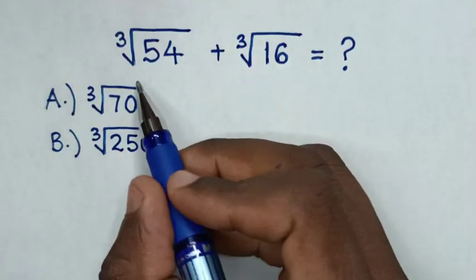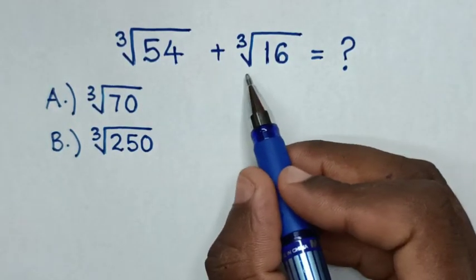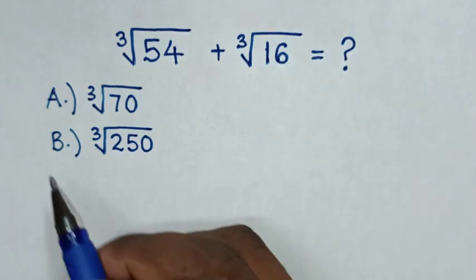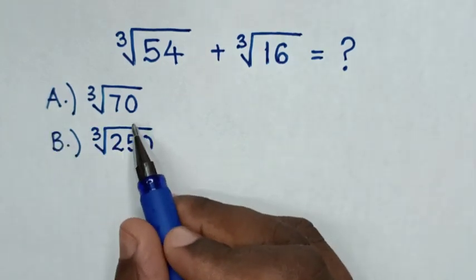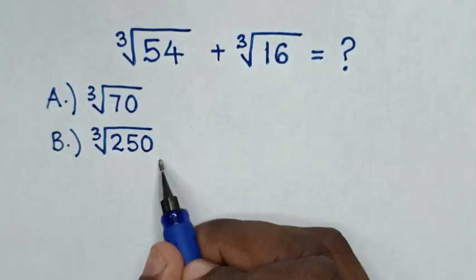Hello, how to solve cube root of 54 plus cube root of 16. Select between the answers: A, cube root of 70; B, cube root of 250.